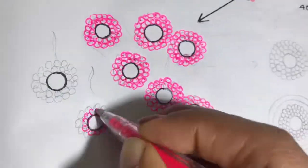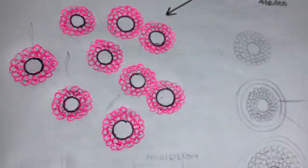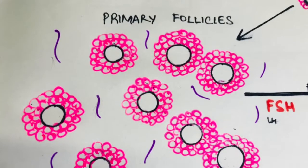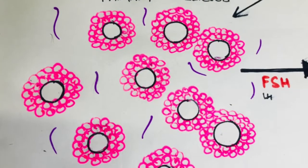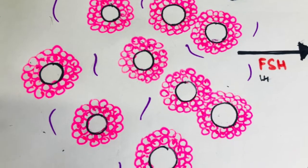These follicles that I've drawn here are known as primary follicles. So we know the conversion from primordial follicle to primary follicle during the first few days of the menstrual cycle.